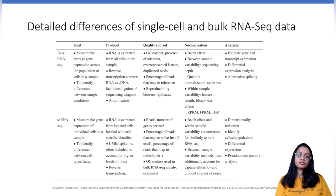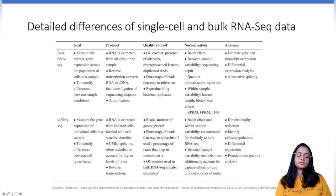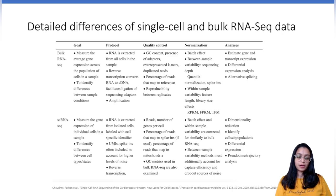For quality control in bulk RNA sequencing, we can inspect quality pre-alignment and post-alignment. Pre-alignment, we inspect the quality of reads by looking at quality scores, GC content, presence of adapters, or overrepresented k-mers. Post-alignment, we typically look at the percentage of reads that uniquely map to the reference. For single-cell RNA-seq, we typically look at the number of reads and number of genes per cell.